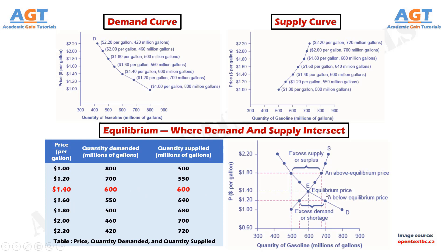This common quantity is called the Equilibrium quantity. At any other price, the quantity demanded does not equal the quantity supplied, so the market is not in equilibrium at that price. The word equilibrium means balance. If a market is at its equilibrium price and quantity, then it has no reason to move away from that point. However, if a market is not at equilibrium, then economic pressures arise to move the market toward the equilibrium price and the equilibrium quantity. At any price above equilibrium, the quantity supplied exceeds the quantity demanded.